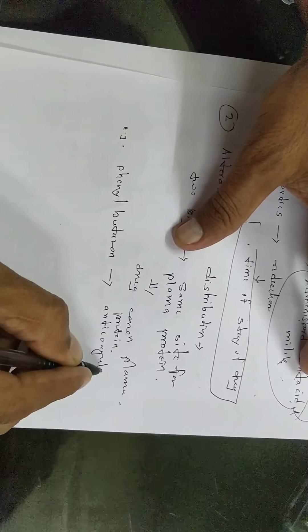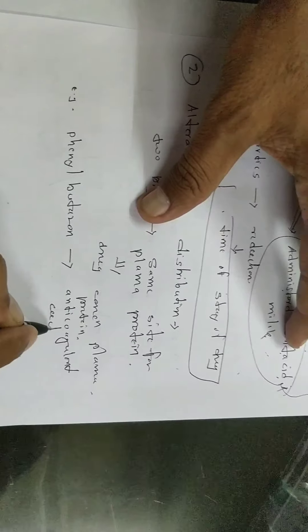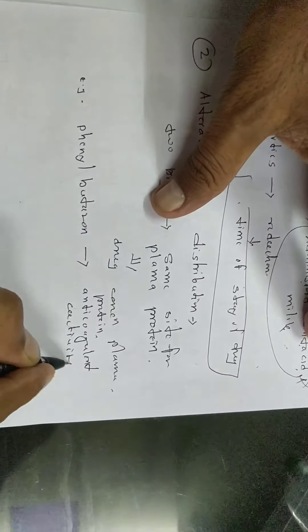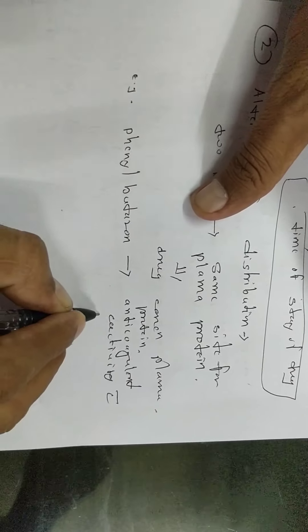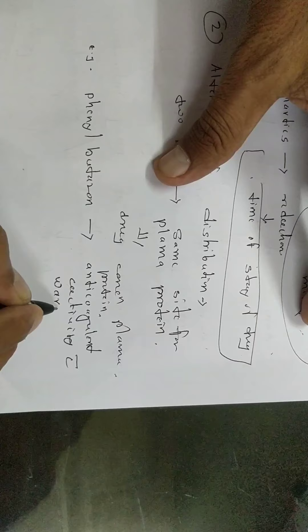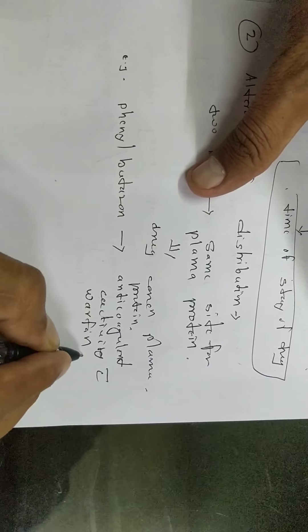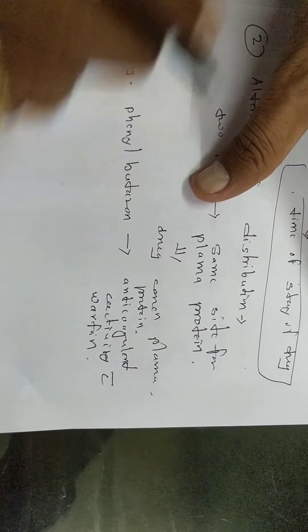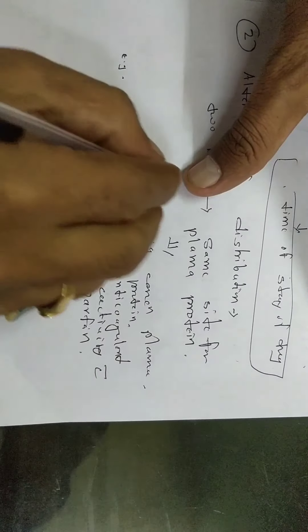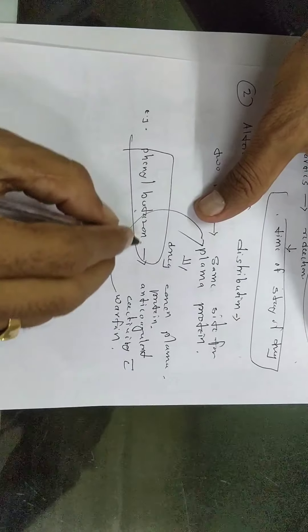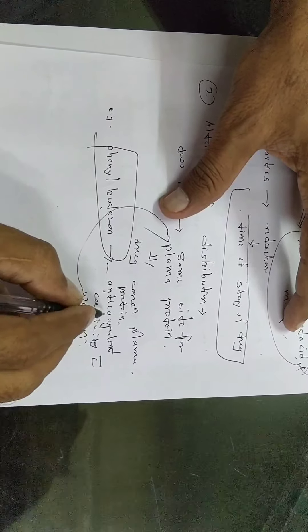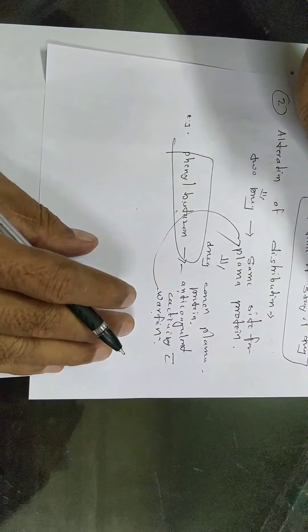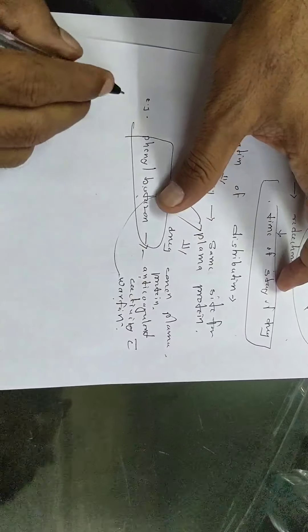Example: phenylbutazone increases the anticoagulant activity when given with warfarin. When both drugs are given together, they compete for plasma protein binding sites and the anticoagulant activity increases — that is alteration of distribution.